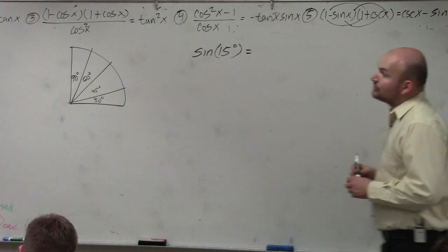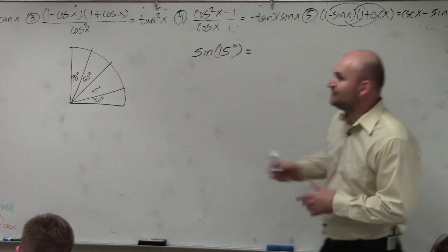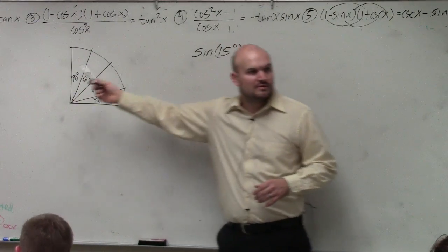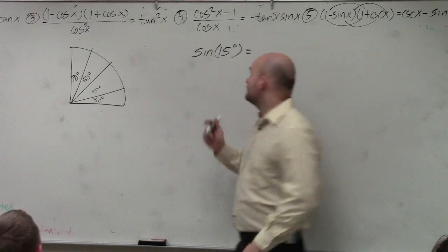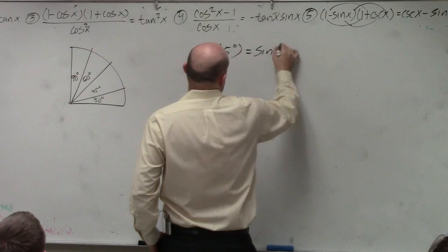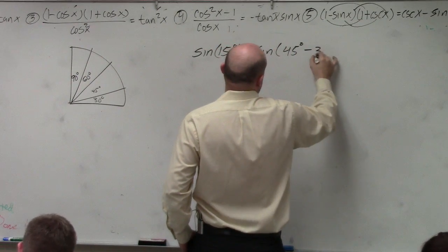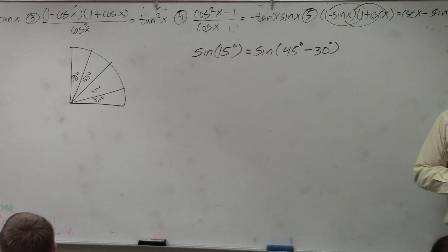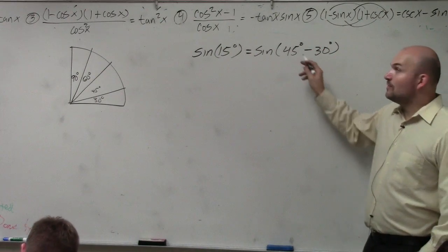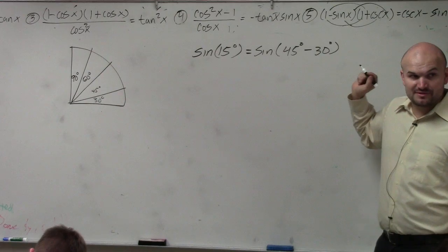So can I rewrite 15 degrees as the sum or difference of any of these two angles that we do know? You could do 45 and 30. So I could rewrite this as sine of 45 degrees minus 30 degrees. Would you guys agree with me? Yes. OK. So that is a difference of two angles.